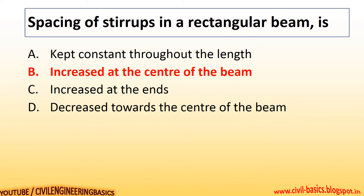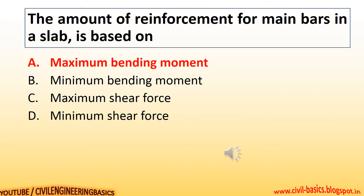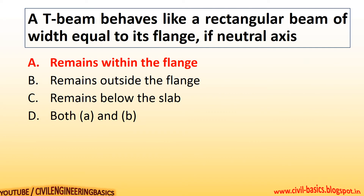Spacing of stirrups in a rectangular beam is increased at the centre of the beam. The amount of reinforcement for main bars in a slab is based on maximum bending moment. A T-beam behaves like a rectangular beam of width equal to its flange, if the neutral axis remains within the flange.